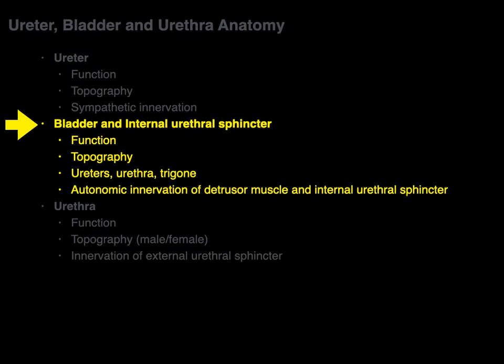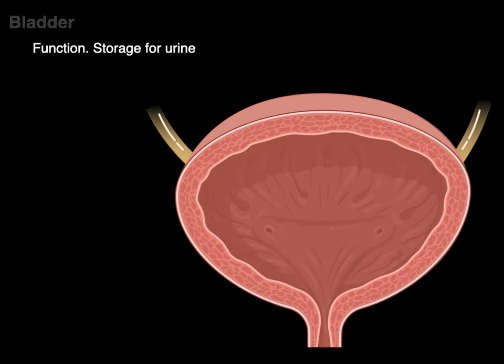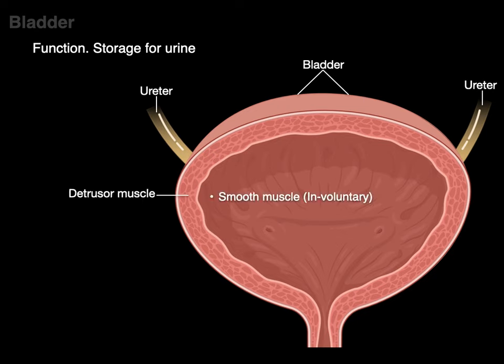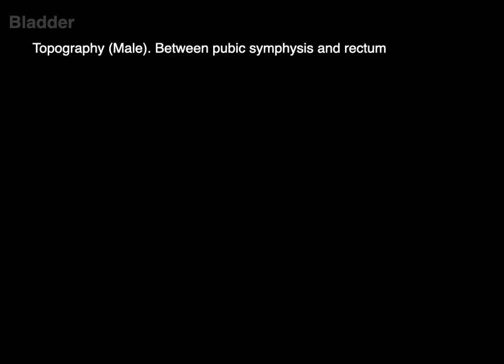Let's talk about the bladder — and I'm going to include the internal urethral sphincter in this part. The bladder's function is storage of urine. Here's a coronal section of the kidney with the paired ureters going into the bladder. The wall of the bladder is made up of the detrusor muscle, which is smooth muscle — meaning it's involuntary. Sympathetics relax the detrusor and parasympathetics contract the detrusor. Para makes you pee.